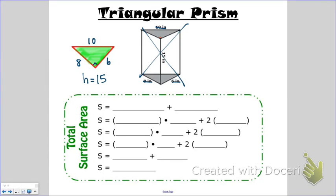When we find total surface area of a triangular prism, we're finding the lateral surface area, which is the first half of the formula, and then we're adding the area of the two bases. When we found the lateral surface area, we only found the area of the sides of the prism.